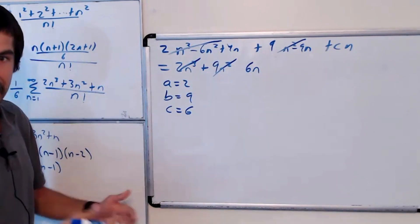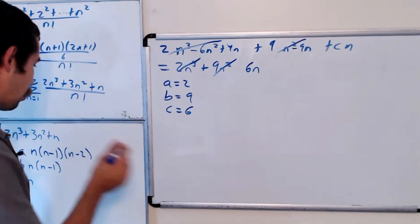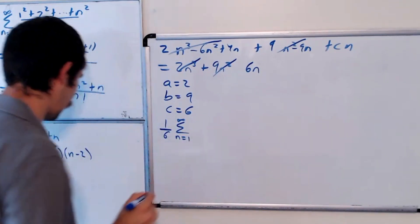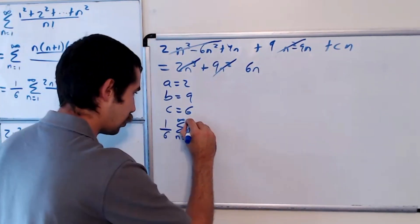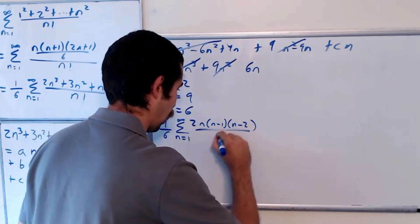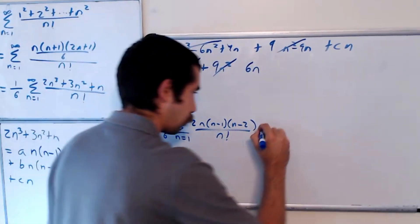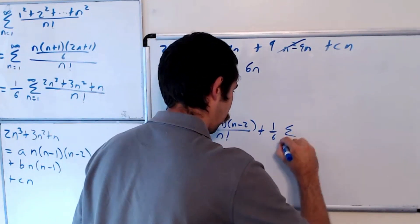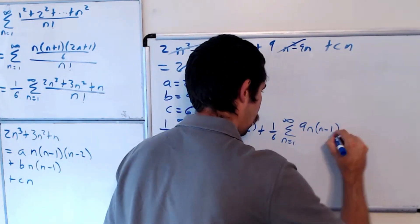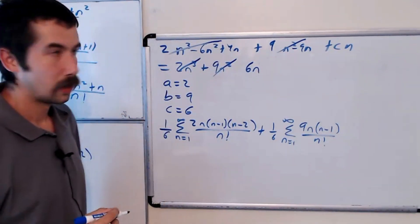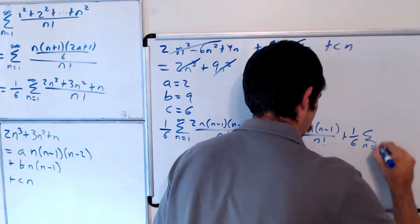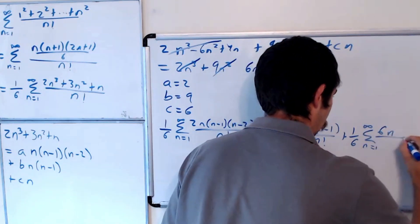A lot of terms are going to cancel out when we write our series now. The series becomes: 1/6 times the sum from n equals 1 to infinity of 2·n(n−1)(n−2) over n factorial, plus 1/6 times the sum from n equals 1 to infinity of 9·n(n−1) over n factorial, plus 1/6 times the sum from n equals 1 to infinity of 6n over n factorial.